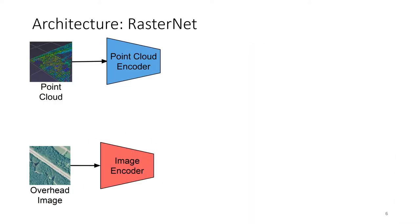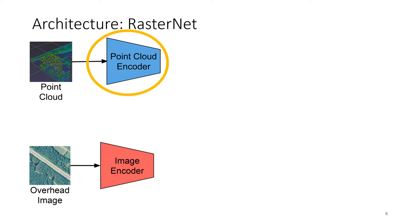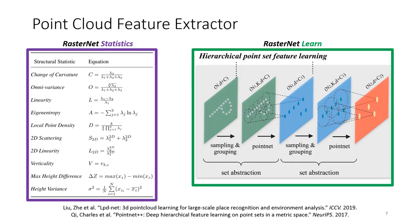We propose a multimodal neural network architecture called RasterNet to predict free flow speed from overhead images and 3D point clouds. The model extracts visual features from overhead imagery using a truncated ResNet image encoder. For point cloud feature extraction, we explore two different strategies. The first, RasterNet Statistics, uses multi-scale grouping to collect local neighborhoods of points and then calculates 10 statistical features for each neighborhood. The second, RasterNet Learn, uses multi-scale grouping and extracts learned features using a reduced PointNet++ architecture.